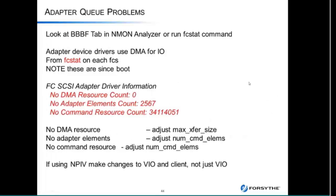For adapter queue problems, in Nmon Analyzer there's the BBBF tab, or you can run FCStat. For each fiber adapter, three parameters matter: no DMA resource count, no command elements count, and no command resource count. If you're seeing numbers in no adapter elements or no command resource count, you need to adjust num command elements — that is queue depth for the adapter. The no DMA resource is a direct memory area the adapter uses to move things around. Make these changes in your VIO server, but with NPIV you need to ensure the VIO server settings are the same size or larger than the client settings — if you make the client bigger than the VIO server, your client won't boot.